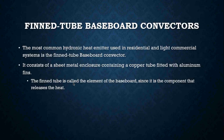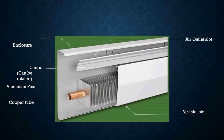The most common hydronic heat emitter used in residential and light commercial systems is the fin-tube baseboard convector. It consists of a sheet metal enclosure containing a copper tube with aluminum fins. The fin-tube is called the element of the baseboard, since it is the component that actually releases the heat. Your hot water runs through the copper tube all the way along and back to the boiler — a constant heating loop — and as that hot water passes through the copper, the heat is transferred to the aluminum fins.